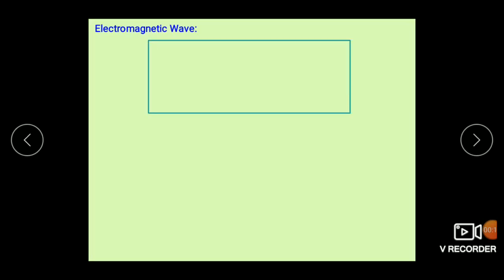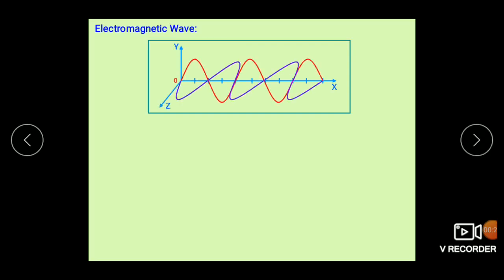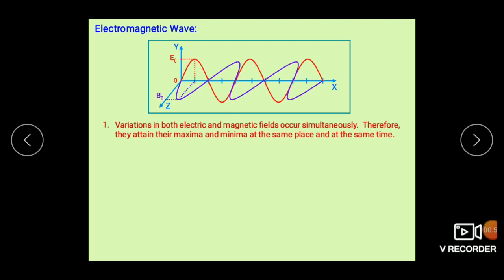We know light has electromagnetic wave nature and it has electric and magnetic fields vibrating perpendicular to each other. Suppose light is propagating along the x-axis; vibrations of the electric field are along the y-axis and vibrations of the magnetic field are along the z-axis. E0 is the amplitude of electric field while B0 is the amplitude of magnetic field. The vibrations of electric and magnetic fields occur simultaneously, so they attain their maxima and minima at the same place and at the same time.